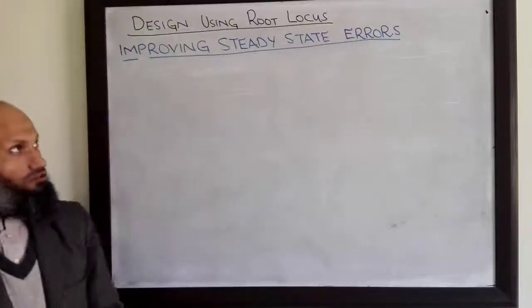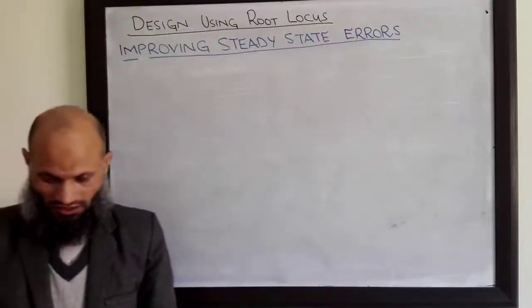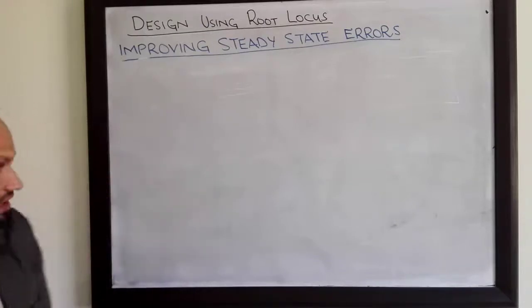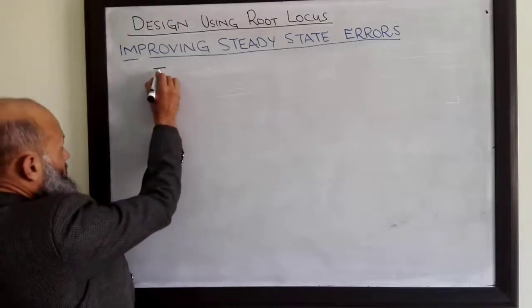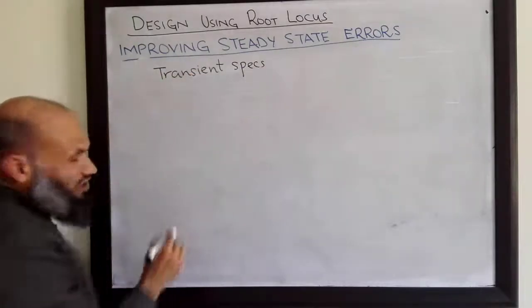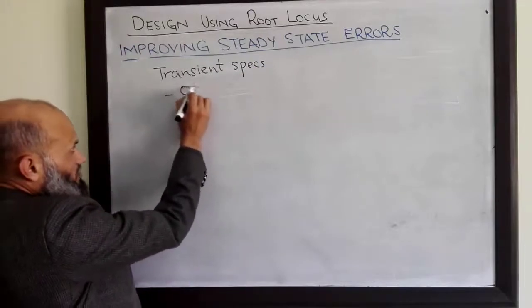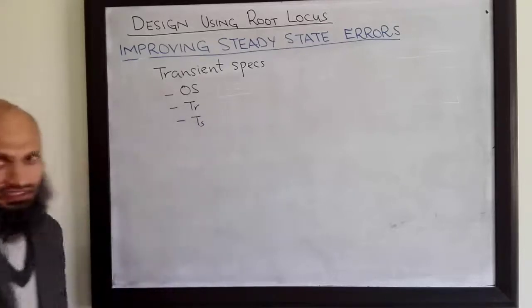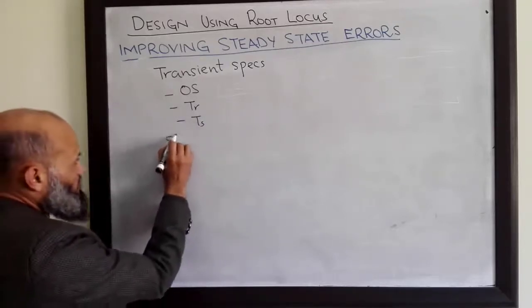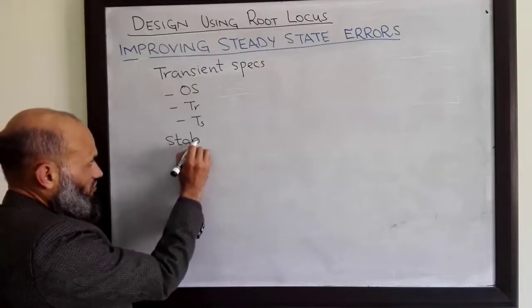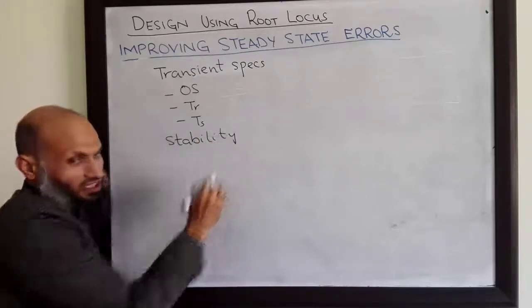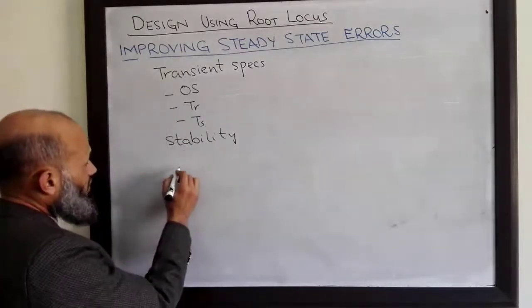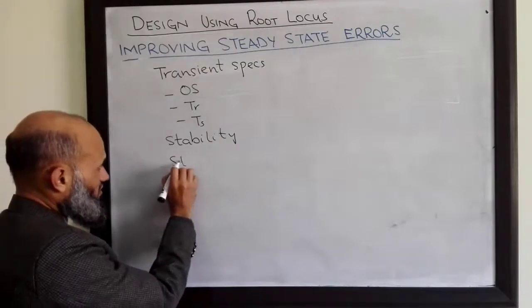Assalamu alaikum. When you are asked to design a controller for a particular system, you are provided with design specifications. Design specifications generally include transient specifications, characterized in terms of overshoot, rise time, and settling time. There is another very important design specification which is stability — you must always ensure stability even if not explicitly mentioned. The third important design specification is steady state errors.